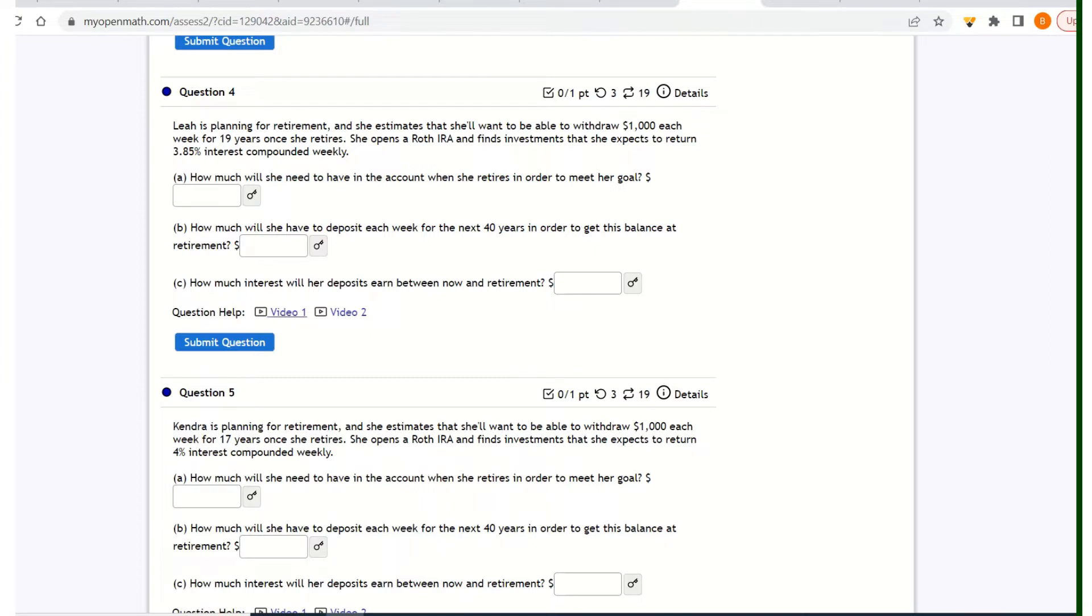So Leah is planning for retirement, and she estimates that she'll want to be able to withdraw $1,000 each week for 19 years once she retires. She opens a Roth IRA and finds investments that she expects to return 3.85% interest compounded weekly.